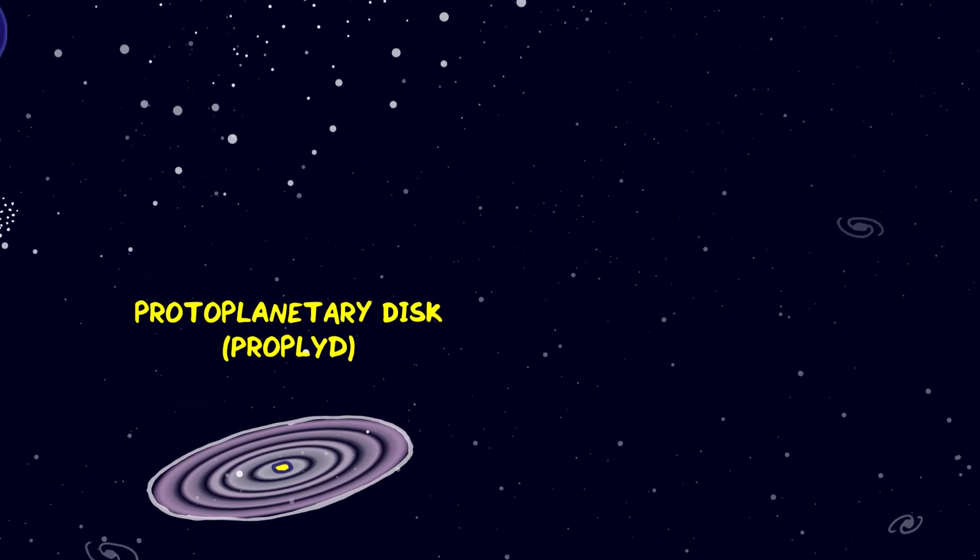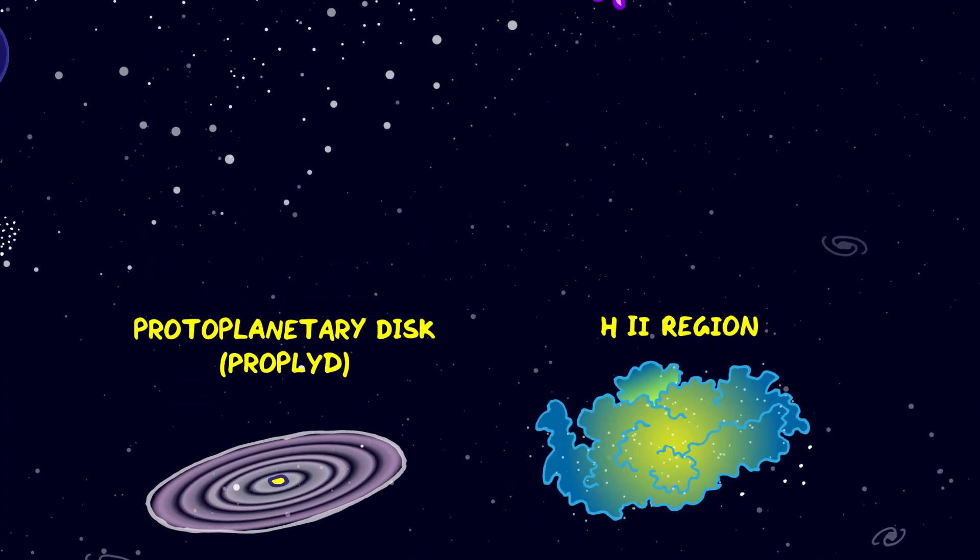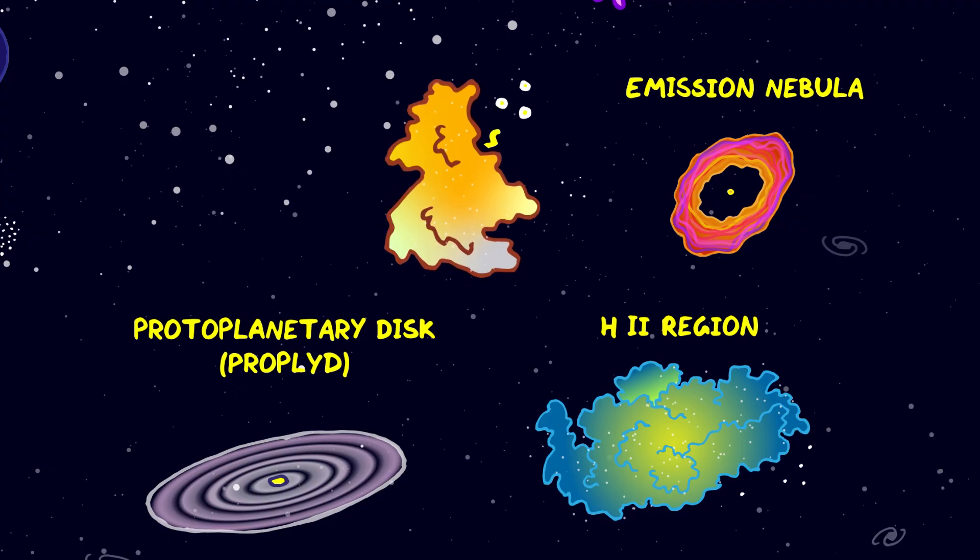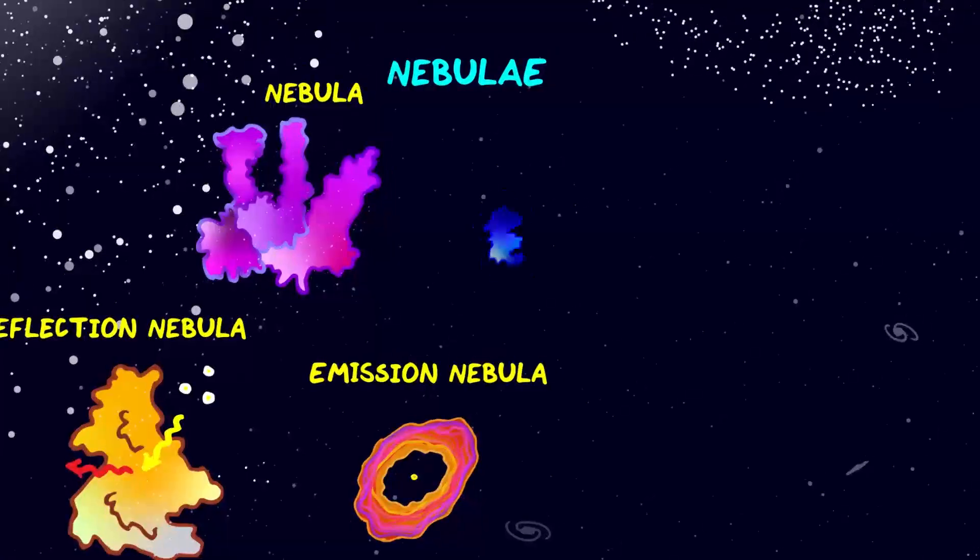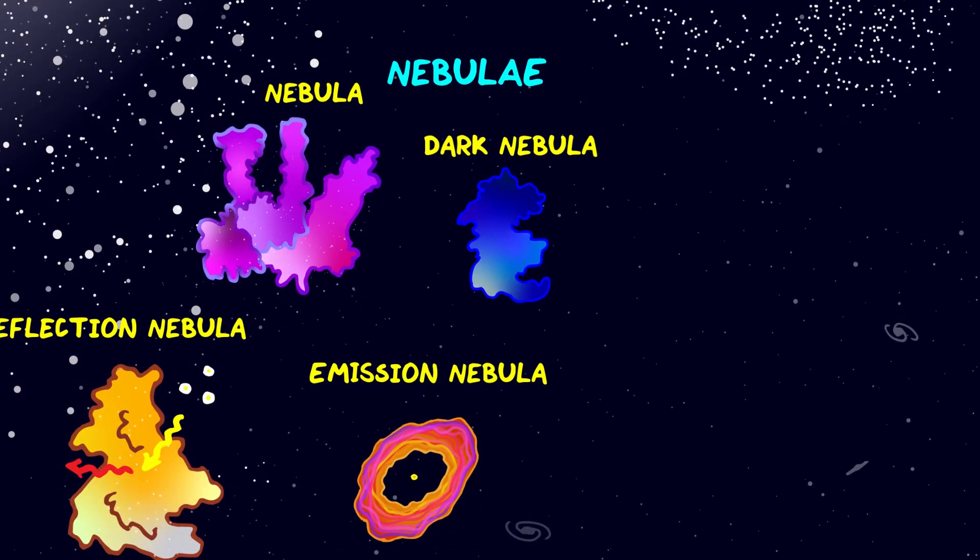There are many other kinds of nebula too, an H2 region is a cloud of ionized hydrogen gas where star formation is taking place, an emission nebula is where a nearby hot star ionizes its gas, and then it emits light at different frequencies. However, if the light from the star is not energetic enough to ionize the gas, instead it will scatter off it making a reflection nebula. And some nebulae are so dense they block light coming through. These are called dark nebulae.